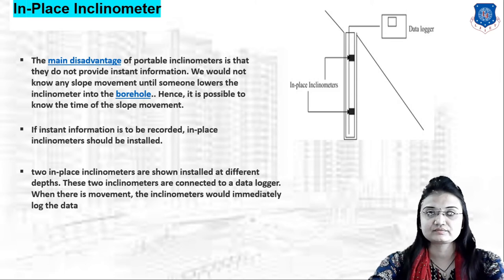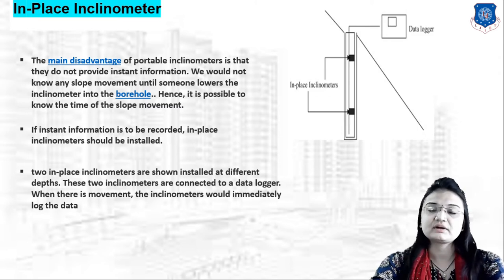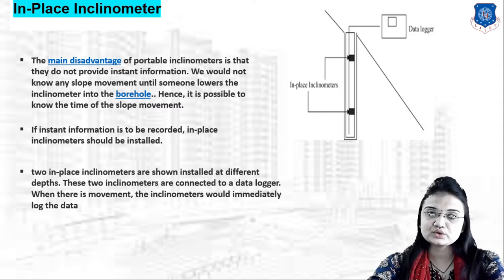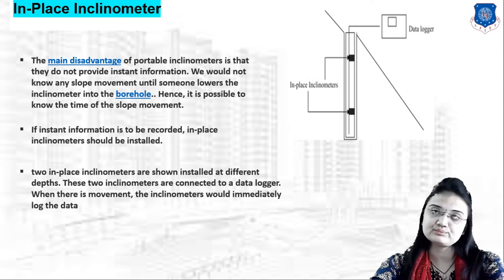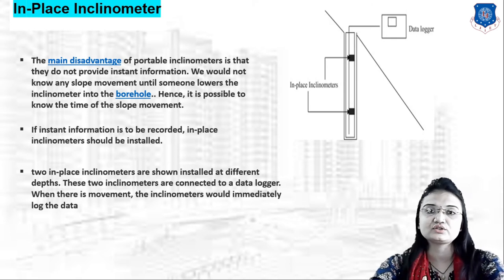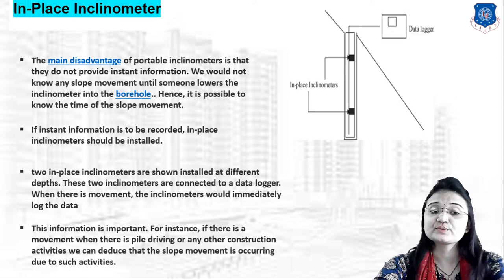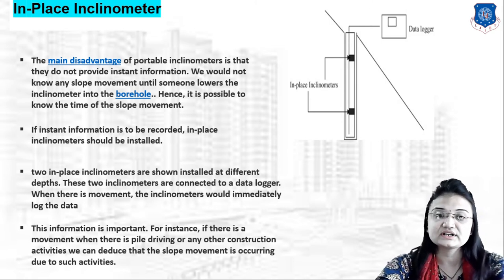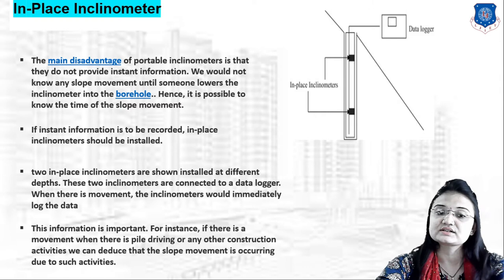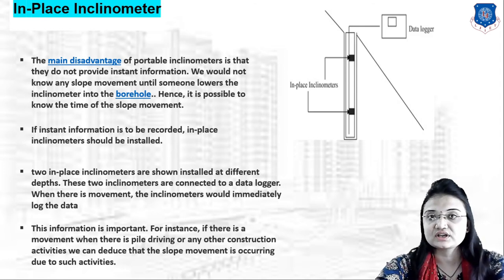The portable inclinometer (manual and digital) can be taken anywhere but does not provide instant information. The in-place inclinometer system — with two units connected to a data logger — immediately logs any movement and provides instant information. This instant information is very important; for example, if slope movement occurs during pile driving or other construction activities, we can immediately detect it using in-place inclinometers.